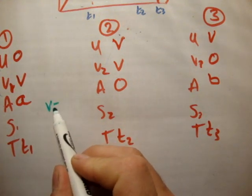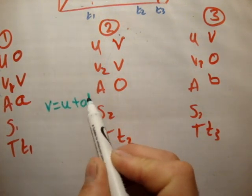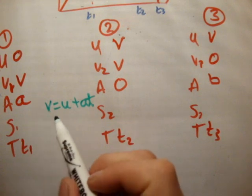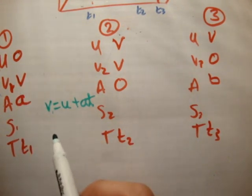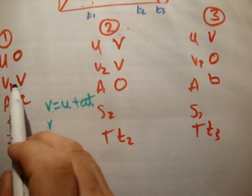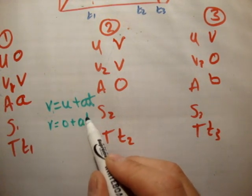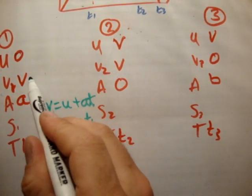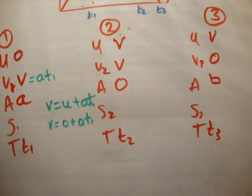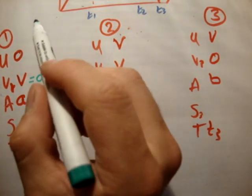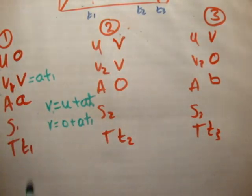So, we know that v is equal to u plus at. So, in this case, v1 is equal to u plus at. So, v, this v here, is equal to 0 plus a times t1. So, v is equal to at1. Or, you could say, t1 is equal to v over a. So, that's the first part done.